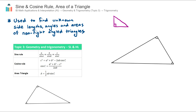Before we go into examples, let's recap how to correctly label a triangle in order to use these rules correctly. The important points to remember are that angles are given capital letters — so for example this bottom left angle here we can call capital letter A — and the opposite side length to that angle we give the lowercase version of the same letter, so here that would be lowercase a.